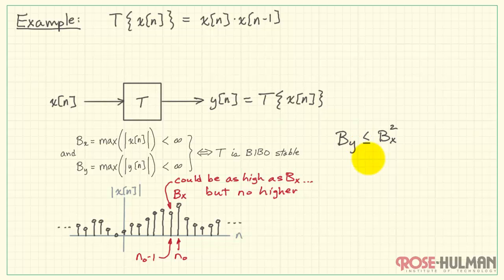If we wanted to make this a little more general, we could say that b_y is less than or equal to b_x squared. That allows the previous value to be less than b_x. But in any event, if b_x is finite, certainly b_x squared is also finite. Therefore, we conclude that our bound, b_y, is finite. These two statements then become true. Therefore, we conclude that our system is bounded input bounded output stable.